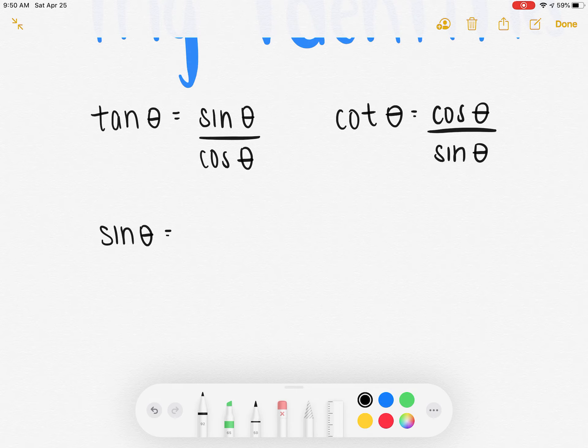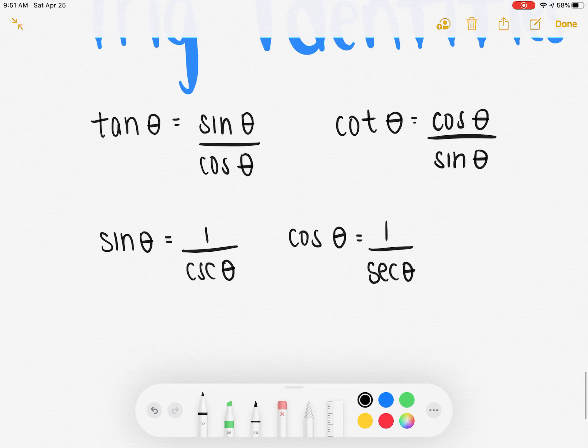Sine of theta is equal to one over cosecant theta, cosine of theta is one over secant theta, and tangent is one over cotangent theta.